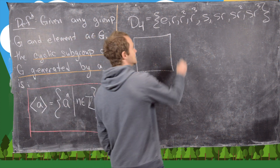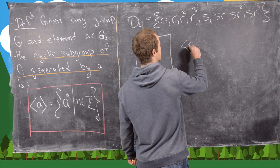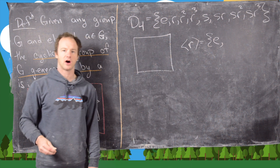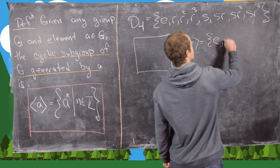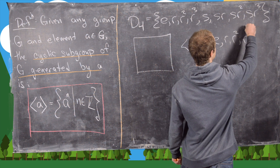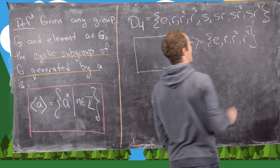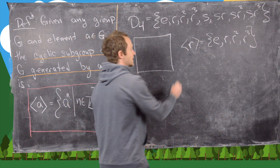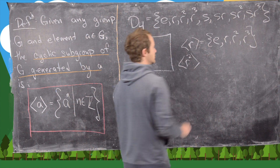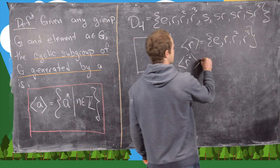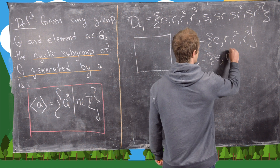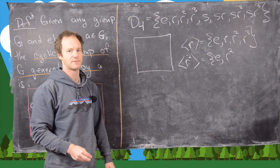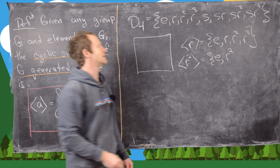The easiest cyclic subgroup to look at is <R>, which contains the identity (R to the 0), R, R squared, and R cubed. Since R to the 4th gets us back to the identity, we don't need to include it. Next, the cyclic subgroup generated by R squared contains the identity, R squared to the first power which is R squared, and R squared squared which is R to the 4th, back to the identity.